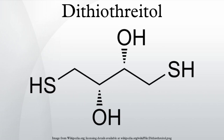DTT is an unusually strong reducing agent, because once oxidized, it forms a stable six-membered ring with an internal disulfide bond. It has a redox potential of minus 0.33V at pH 7.